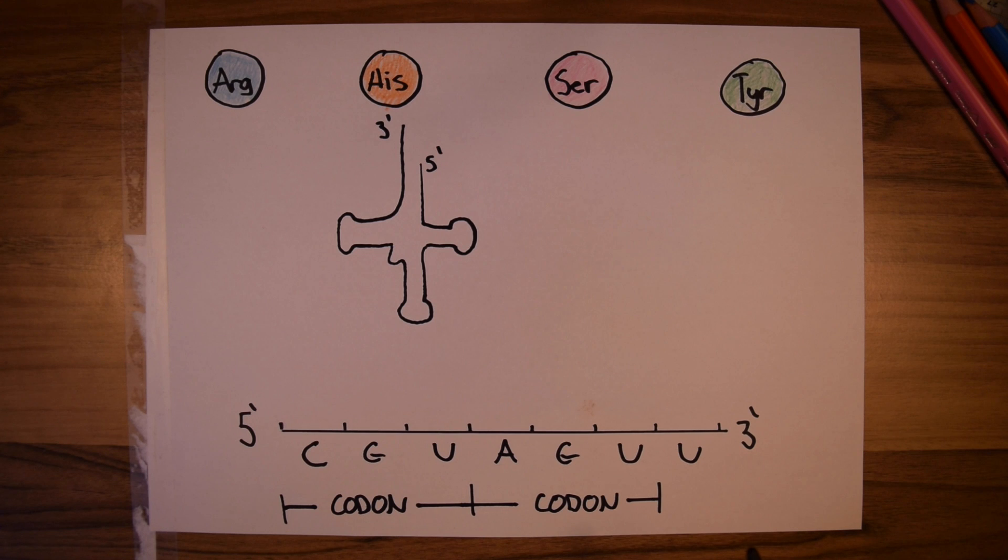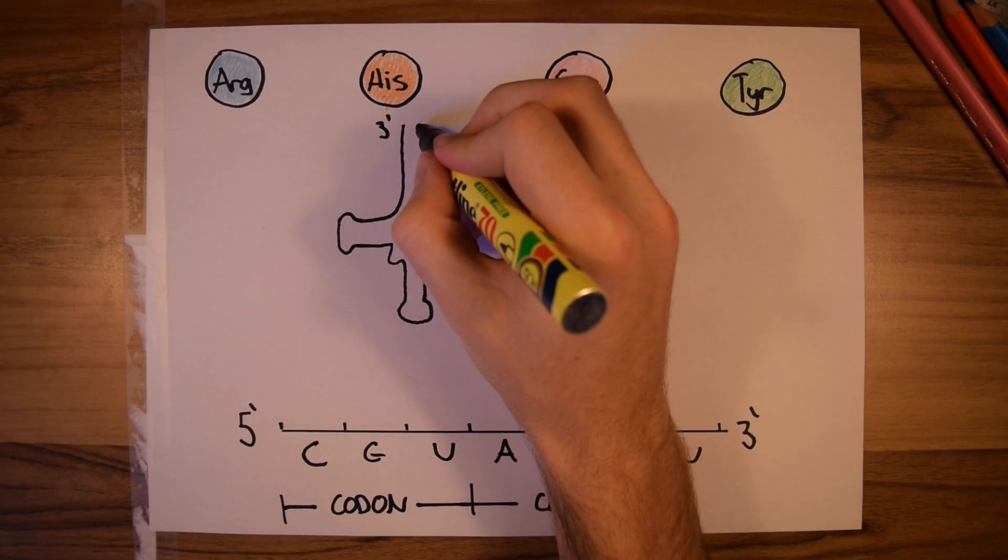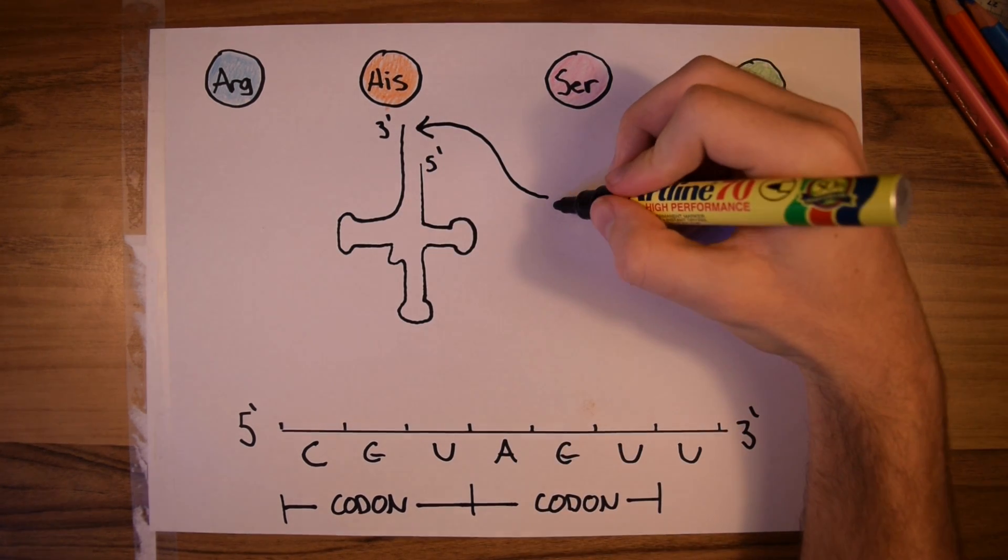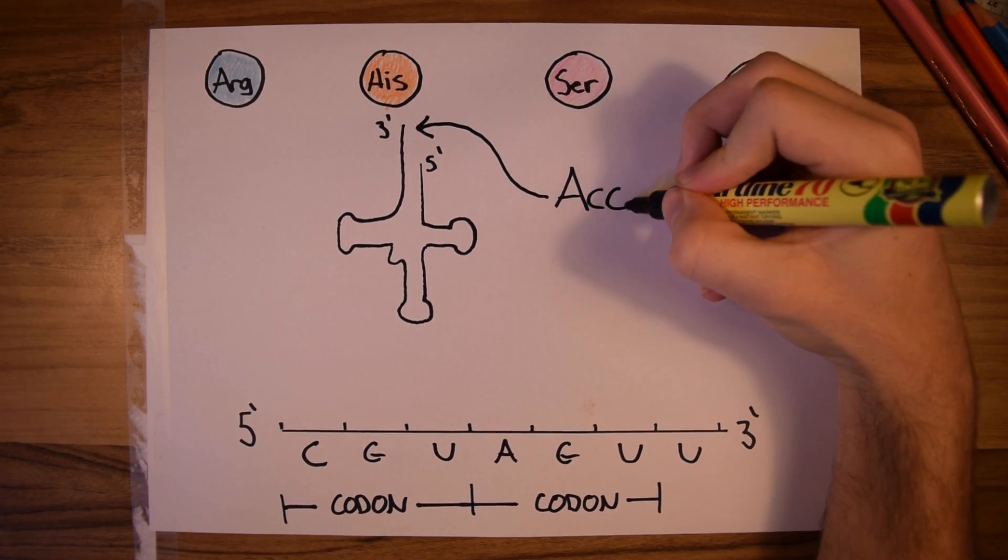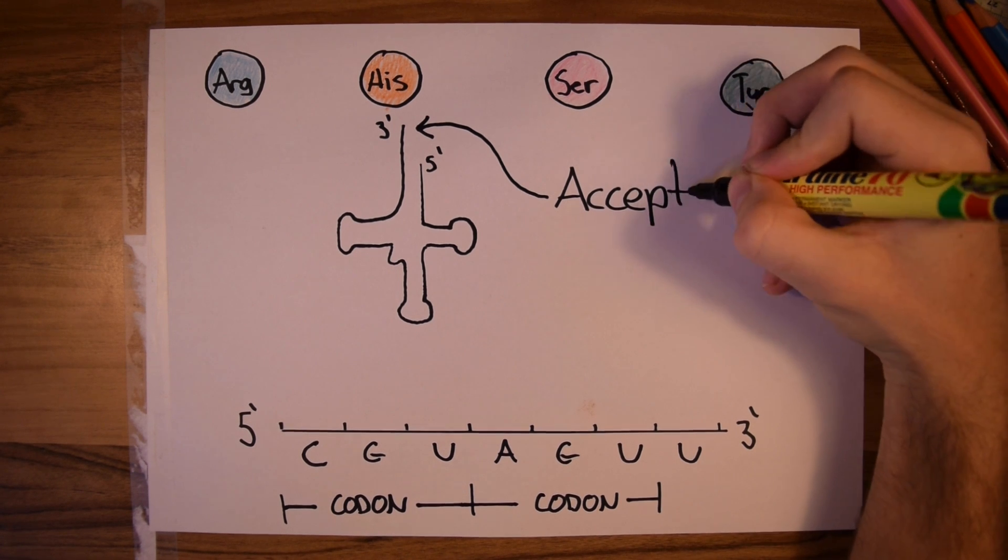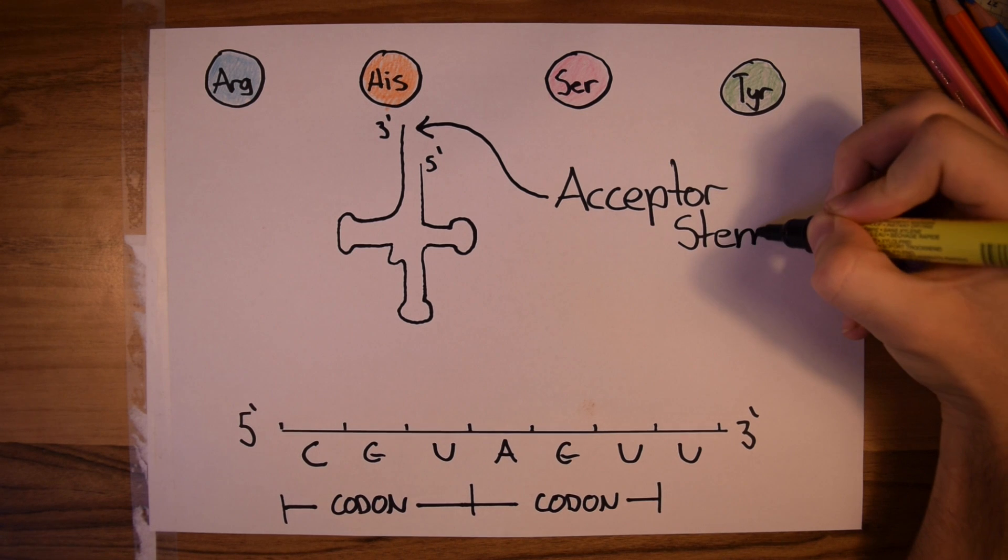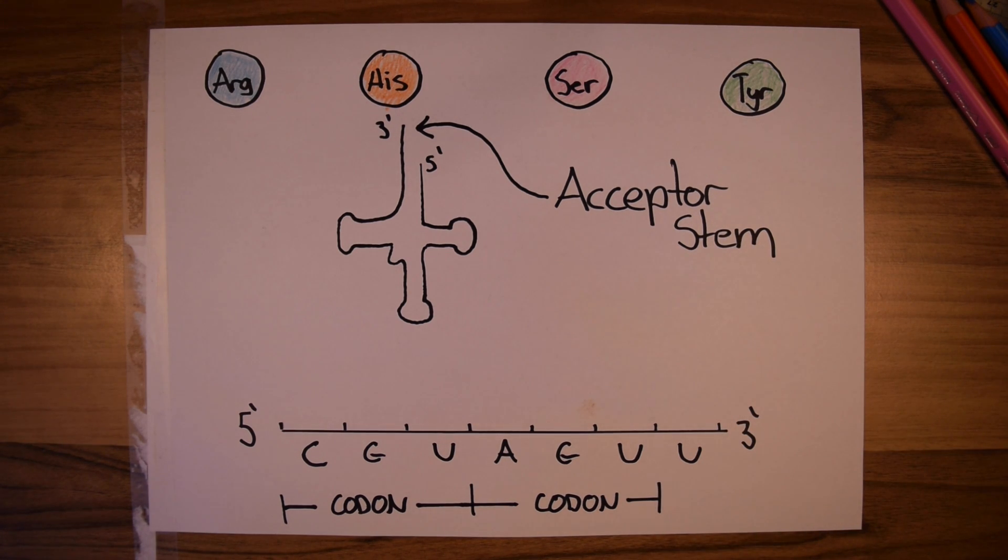tRNA molecules exhibit two levels of specificity that are needed in order to accurately match the codon to the correct amino acid. The first specificity is the aminoacyl tRNA synthetase. Elements in what is known as the acceptor stem make sure the right amino acid is to be added. There are many different types of tRNA; each one only has one kind of amino acid that can be added.